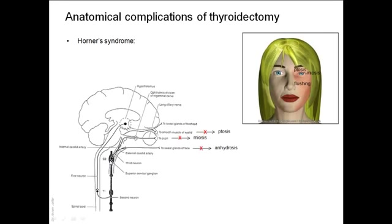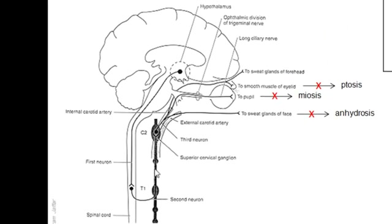To emphasize: the cervical sympathetic trunk has no white rami communicantes from the cervical spinal nerves, and the pre-ganglionic fibers ascend upwards from the thorax. There are three ganglia: superior, middle, and inferior cervical ganglion. The inferior cervical ganglion may sometimes fuse with the first thoracic ganglion to form the stellate ganglion.